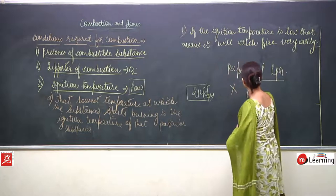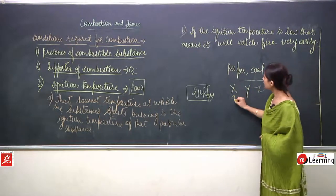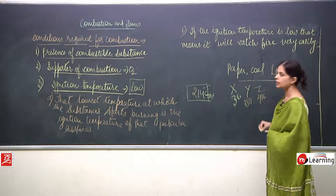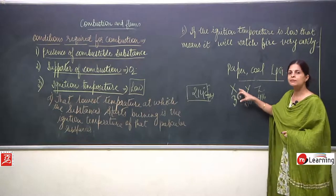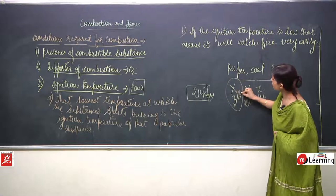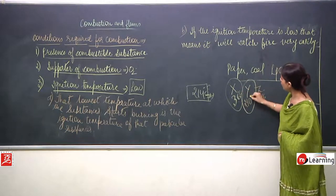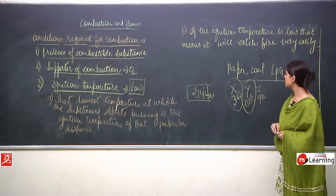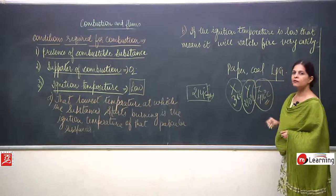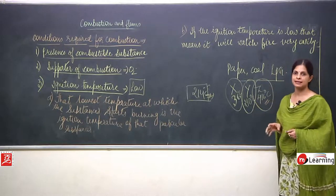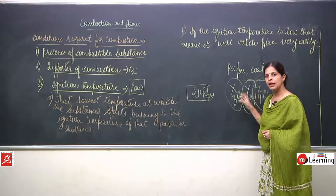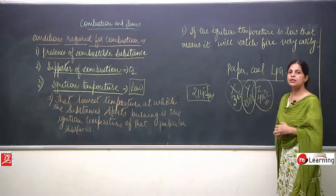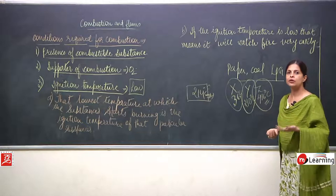If we give three substances X, Y, and Z with ignition temperatures of 36°C, 240°C, and 416°C respectively — these are the minimum temperatures required for each to burn. Until and unless each substance reaches its ignition temperature, it would not catch fire, would not undergo combustion, and would not burn.